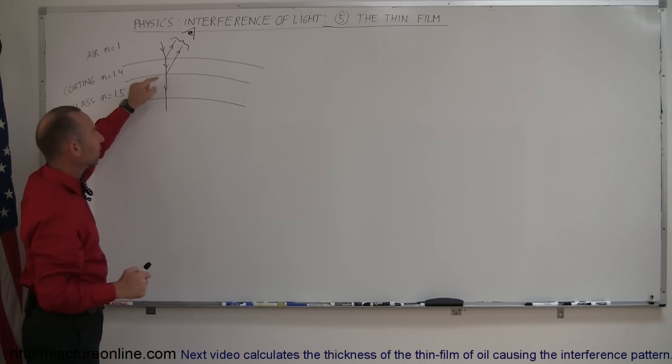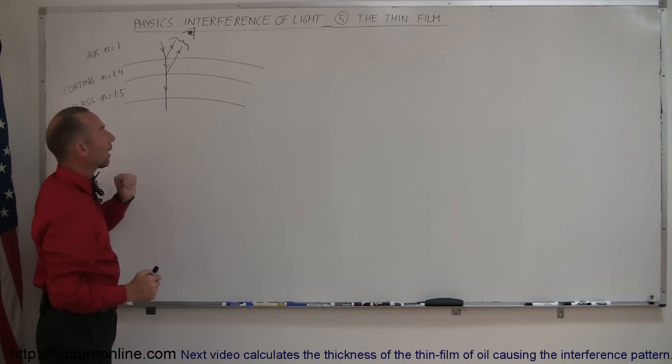Then when it gets to the other side of that boundary, again, part of the light will be refracted into the glass and part of the light will be reflected off of this boundary.